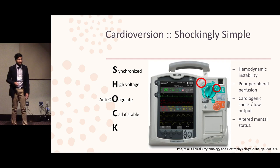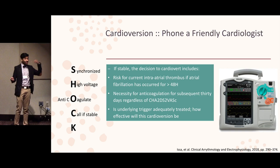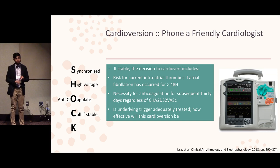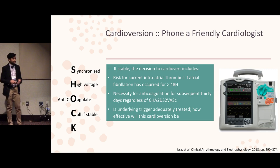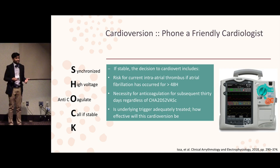If they're stable and you're considering cardioversion because it's difficult to rate control, call cardiology, because there are a couple things we've got to figure out. One: if the AFib episode has been going on for more than 48 hours, we have to make sure there's not an intracardiac thrombus. Regardless of their CHA2DS2-VASc score, for the next 30 days after cardioversion they have to be on anticoagulation because of the risk of atrial stunning. And last, we have to figure out if the underlying condition is adequately treated — is that thyroid storm, sepsis, or acute decompensated heart failure treated well enough that our cardioversion is going to stick?